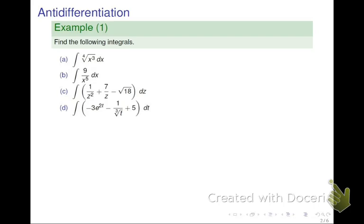If you look at part A, the first thing we need to do is to rewrite the integral into the power form. So fourth root of x cubed can be rewritten as x raised to the power of 3 over 4. And once we have that written in the power form, we can use the power rule for the anti-differentiation.